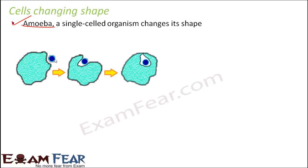Here is an example where amoeba takes in food. Let us suppose this is a food material and this is the amoeba. The amoeba wants to engulf this food particle. The picture shows it in steps — step 1, step 2, and step 3. In step 1, the food is outside the amoeba, and in step 3, the food has entered inside. Amoeba changed its shape in such a way that the food particle gets trapped inside, and that is how food is taken in — possible only because this cell is able to change its shape.